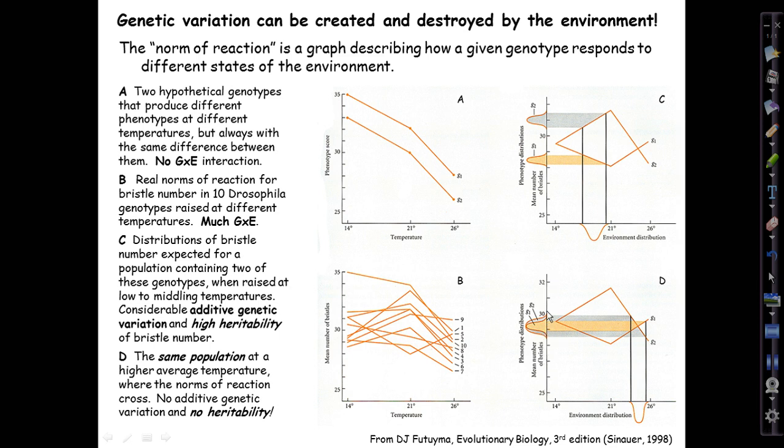The bristle number wouldn't change because you hadn't changed the genotypes. No additive genetic variation, no heritability. So notice what's happened: we can create genetic variation by changing this population of panel D to the environment of panel C, or we can destroy it by moving the population from this environment to that, from the panel C environment to the panel D environment, and remove the genetic variation. We haven't changed the genes. We've changed the environment, but we've created and destroyed genetic variation. And the converse is also possible.